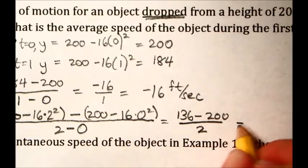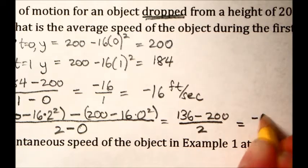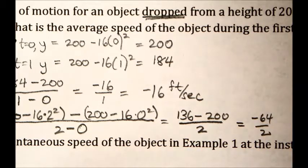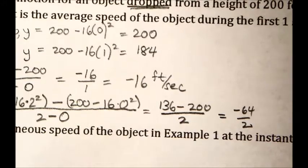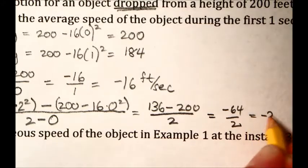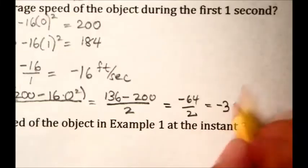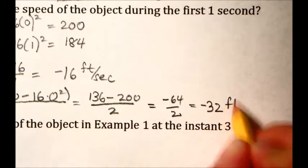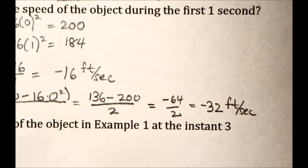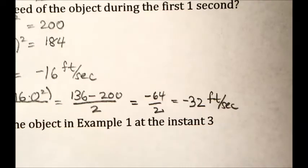We already calculated this earlier. This is the 200 minus 0 from part A, so to speak. So this is 200. And now the difference in time is 2 seconds. The difference here is negative 64 over 2, and then this comes out to be negative 32 feet per second. Again, this does not mean that it's falling at 32 feet per second during the first two seconds. It means that if you average out all the speeds, and there are an infinite number of different speeds in that first two seconds, this is sort of the average of it all.